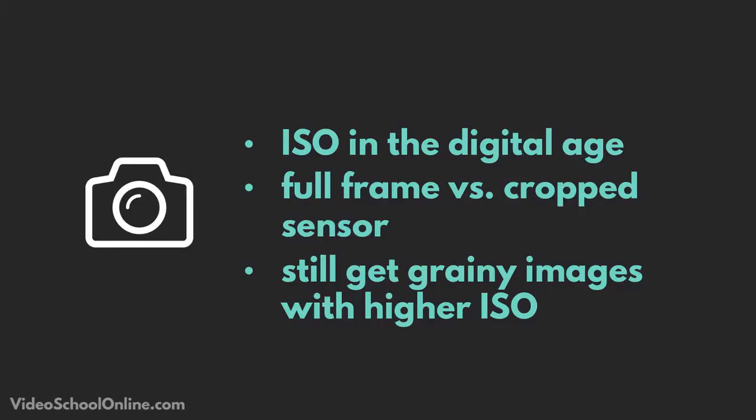Today, the ISO principle exists in digital photography, but it's all created by a computer — ones and zeros. Certain looks you could only get with film you don't get in digital. We still use the same ISO rating system in modern digital photography.